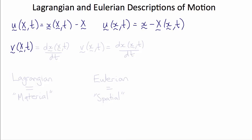Similarly, we could write a Lagrangian or Eulerian definition of velocity. For example, we could write velocity from the point of view of the moving particle, which would be v of big X and t, or d little x of big X and t dt. Or velocity from the point of view of a fixed external observer: v of little x and t is d little x of x and t dt.